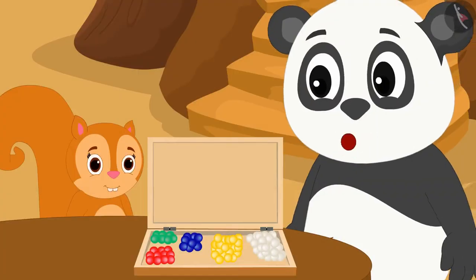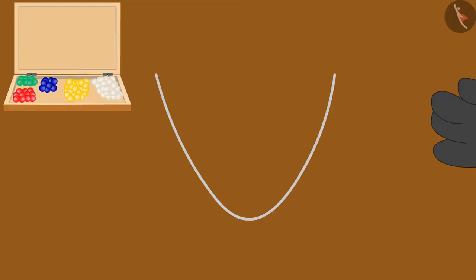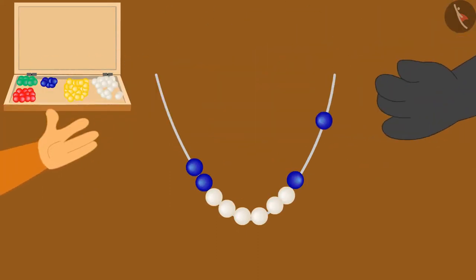Chanda liked Golu's suggestion very much. Now, Chanda and Golu together made a necklace of white and blue beads for uncle.